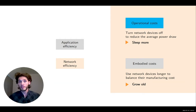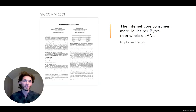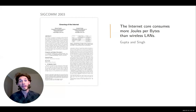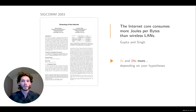Let's get started with the operational costs. You might know this paper from almost 20 years ago, published at SIGCOMM — a position paper where the authors made the provocative argument that the internet core consumes more joules per byte than wireless LAN, which seems quite surprising. They actually hammered the nail by showing with proper calculation that it can be quite a lot more energy hungry.